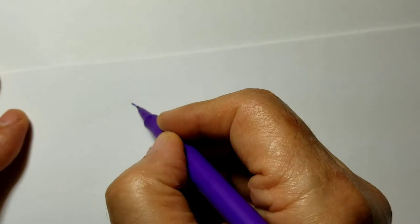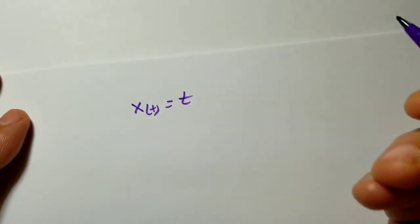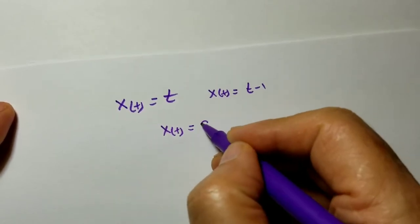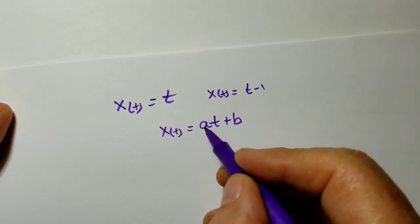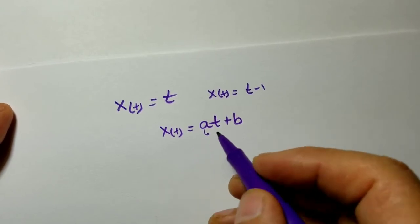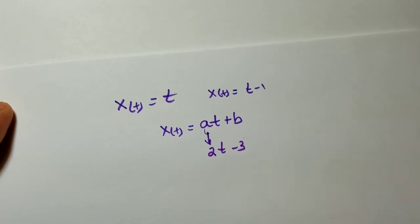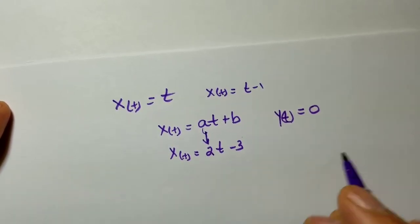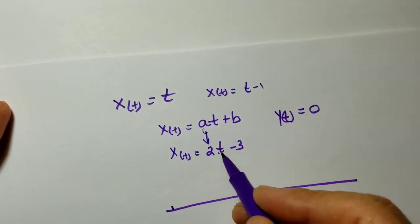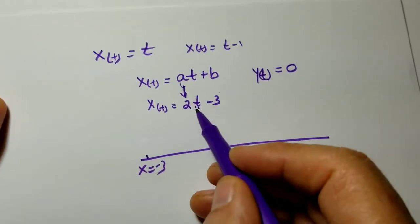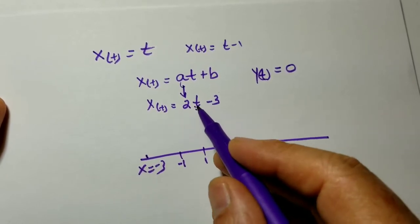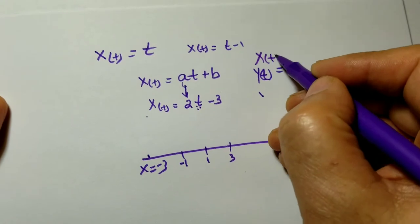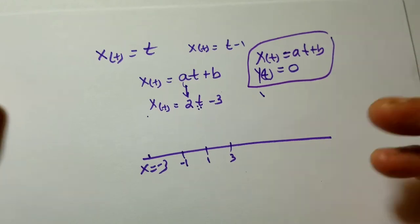Let's talk about the linear path. x of t equals t, or x of t equals t minus 1, or more generally x of t equals at plus b, where a and b can be any real numbers. For example, if a equals 2 and b equals negative 3, that's your x of t. And your y of t is always 0 — that's the horizontal path. When t is 0, x is negative 3. When t is 1, x is negative 1. When t is 2, x is 1. When t is 3, x is 3. And so on. This is called a horizontal path or a linear path.